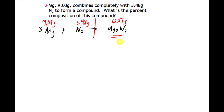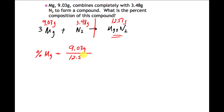If I want to find the mass percent of magnesium, I take 9.03 grams over 12.51 grams, multiply by 100, and the percentage of magnesium is 72.2%.